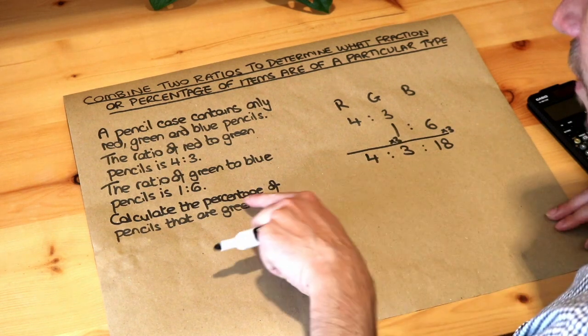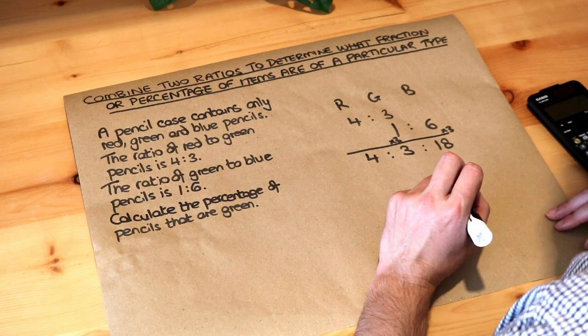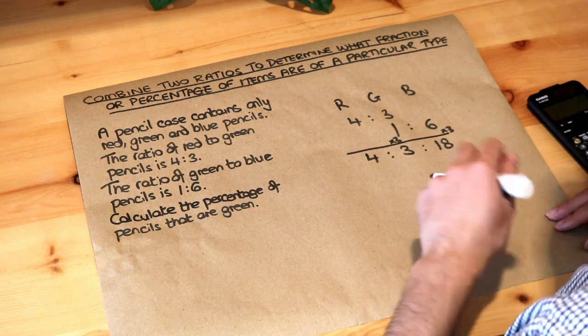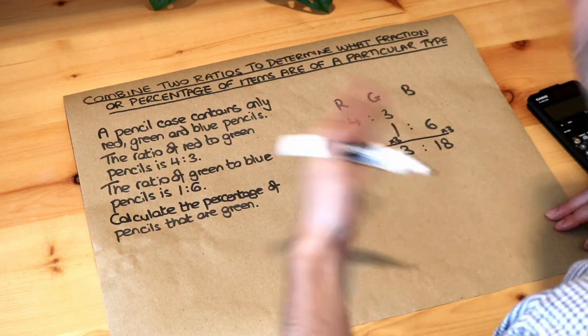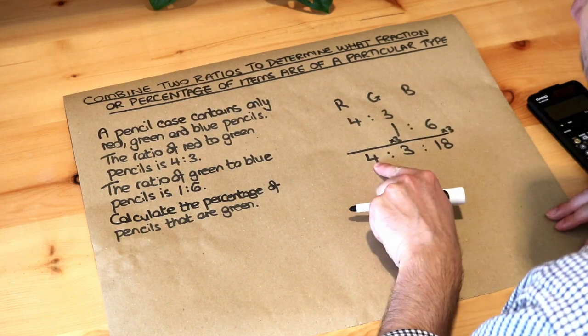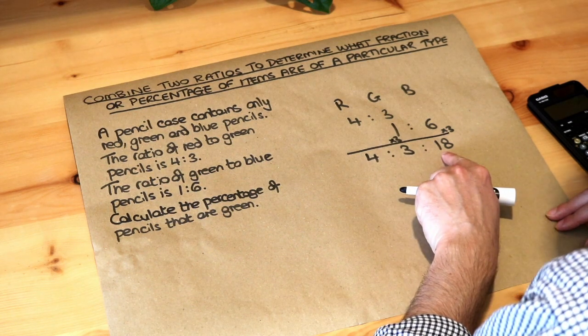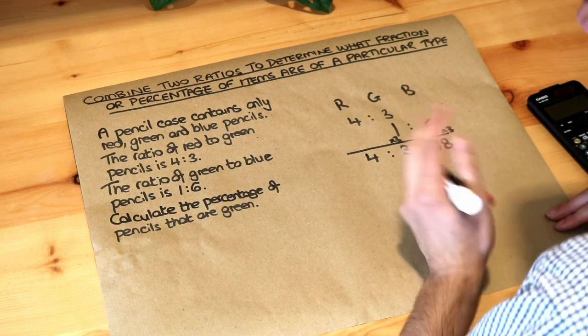Now we want to work out the percentage of pencils that are green. Now we also saw this in another video—if we've got a single ratio, how we can tell what fraction or percentage one of the parts is. Well, if you imagine there were actually four red pencils, three green pencils, and 18 blue pencils, what fraction would be green?